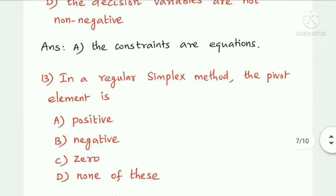Next question: in a regular simplex method, the pivot element is — positive, negative, zero, or none of the above.